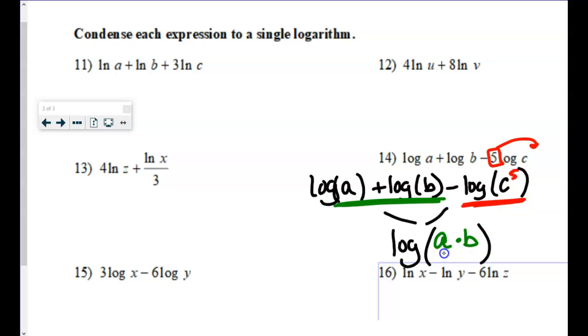But here, you've got a subtraction of a logarithm, which turns that into a division question. So the c to the fifth power is going to end up being in the denominator of this. And this is how I know I'm done. When you're condensing, you're going to rewrite them as a single logarithm, and then you're all good to walk away.